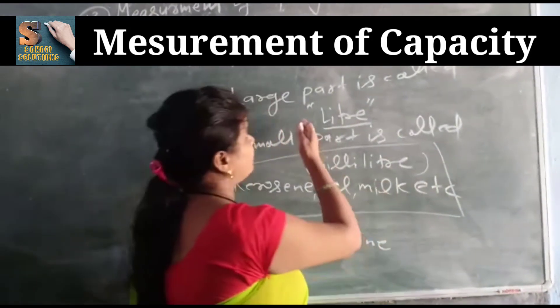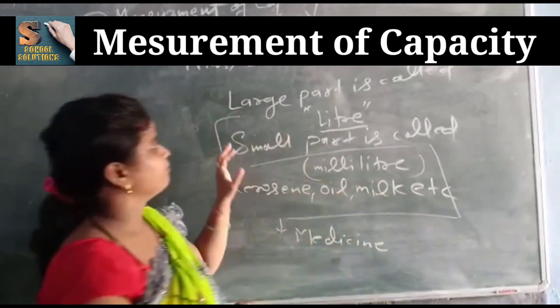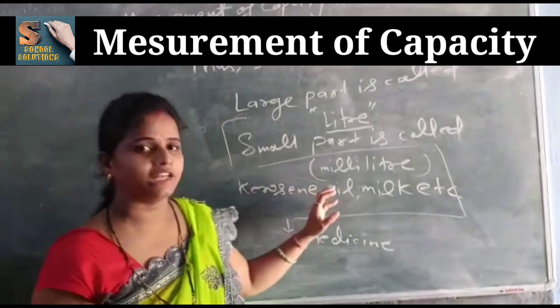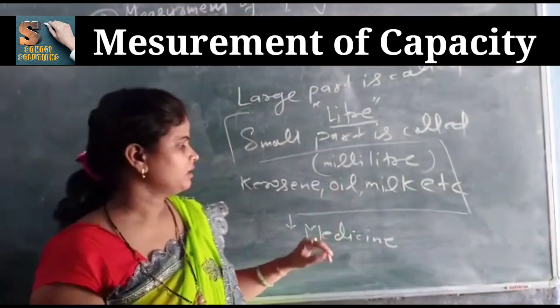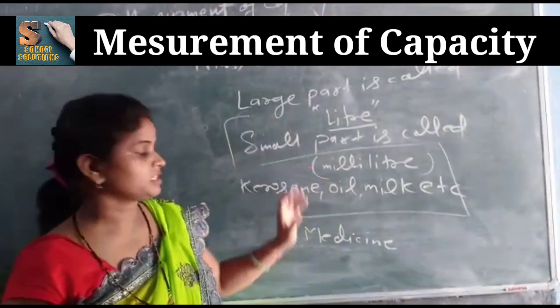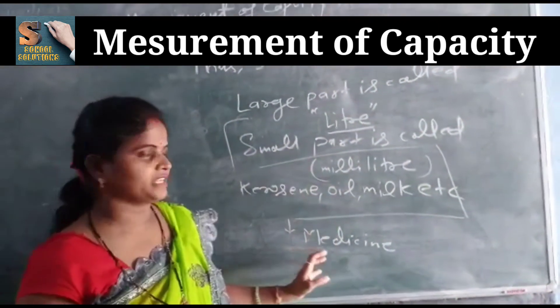Some examples of large quantities: kerosene, oil, milk. Small quantity measuring is called millilitres, for example medicine.